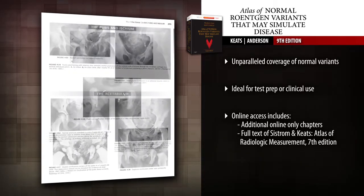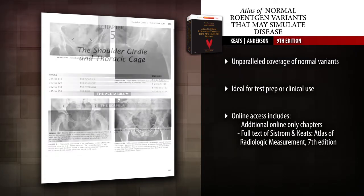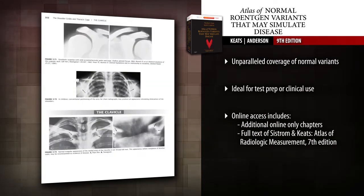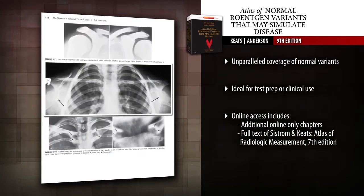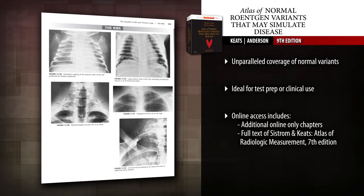Thousands of images capture the graphic presentation of a full range of normal variants and pseudolesions that may resemble pathologic conditions. Recognize the entire spectrum of normal variants with over 6,000 images — the largest collection available on this topic — including hundreds of MR and CT correlations.